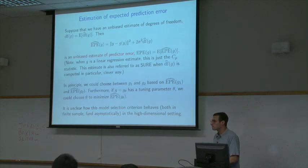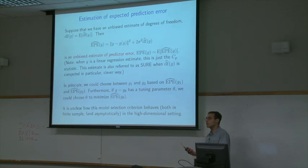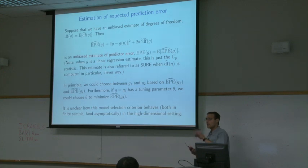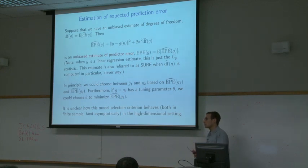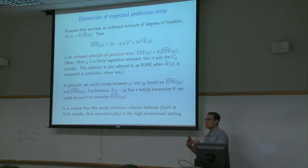For generalized linear models: for classical procedures without penalties, degrees of freedom can be defined as the likelihood difference between the full model and a trivial model, and this typically matches the covariance definition exactly for exponential families. But once you add penalization, the penalized likelihood difference is no longer the same as the covariance form — so there's a disconnect between definitions of degrees of freedom, which is why the speaker stuck with the covariance form.